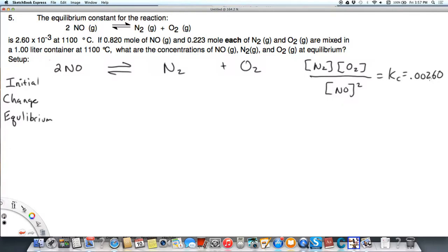It also says that we're given how much of each are mixed at the beginning. For NO we have 0.820 moles over one liter, so that's going to give us our molarity. But N2 and O2 were given 0.223 moles per liter for each of those.